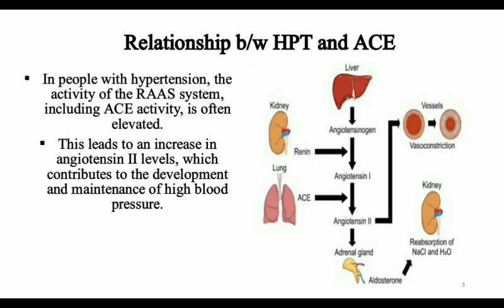Angiotensin-2 is mainly responsible for vasoconstriction, which increases blood pressure. The second mechanism involves the adrenal gland secreting aldosterone due to angiotensin-2, which increases the reabsorption of NaCl (sodium chloride) and water, increasing blood volume and directly increasing blood pressure. In hypertensive patients, the activity of the RAAS system including ACE is often elevated, leading to increased angiotensin-2 levels. In this project, we show that ACE is inhibited by inhibitors, thereby reducing blood pressure.